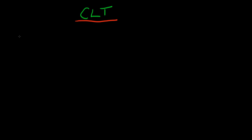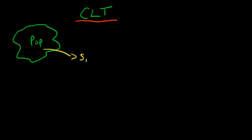So what's the idea of the Central Limit Theorem? Well, the idea is that if I have some sort of population and I take repeated samples from that population — S1, S2, all the way through to Sn, where n is quite a big number — and for each of those samples I calculate the sample mean, so that would be x̄₁, x̄₂, x̄ₙ in general.